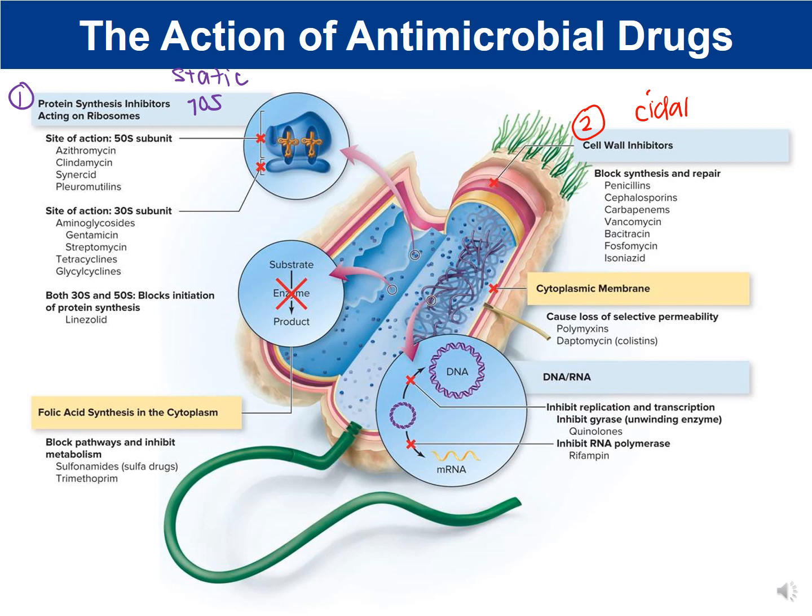The third method is damage to the cell membrane. Examples of drugs that damage the cell membrane include polymyxin, colistin drugs, and daptomycin. These drugs disrupt the cell membrane. Is disrupting the cell membrane bactericidal or bacteriostatic? The answer is bactericidal — it kills the cell. When you disrupt the cell membrane and create holes in it, that causes the bacterial cell to undergo lysis.